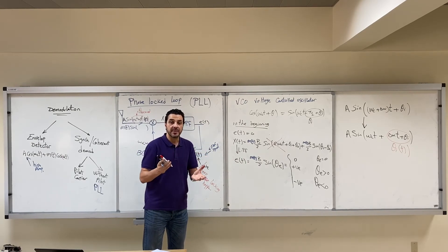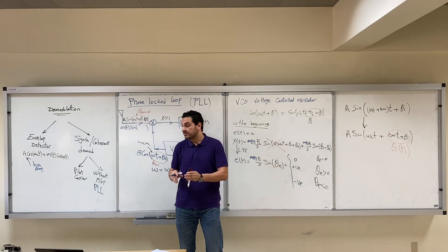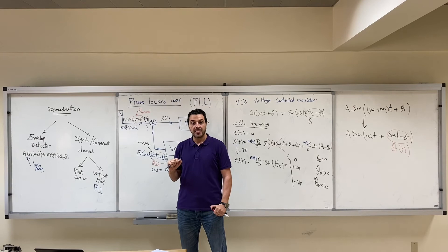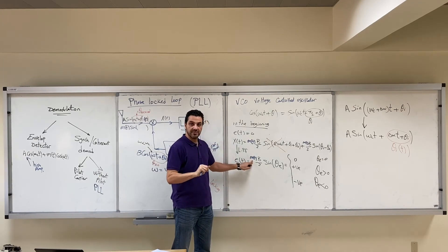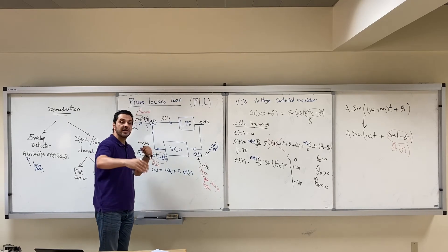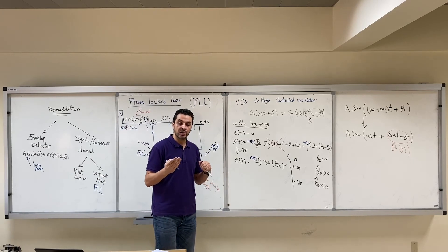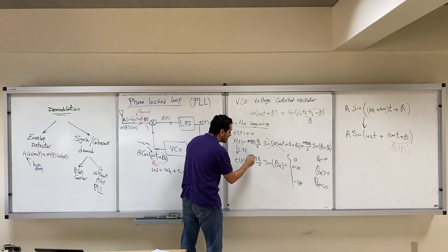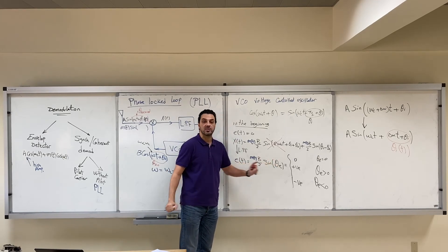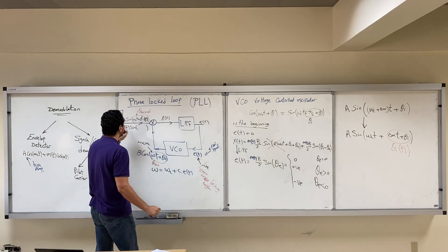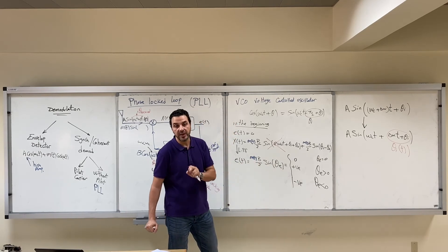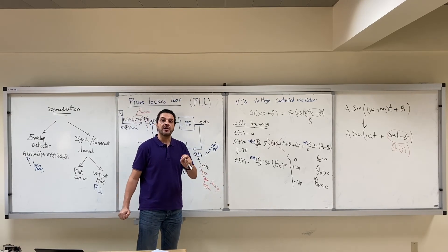Conversely, sometimes the error between theta_i and theta_naught is small, which should give a small error signal. But if M(t) is large at that instant, it will produce a large error signal, causing the VCO to change its frequency by a large amount and disturbing the operation of the PLL. When A was constant, the error depended only on the phase difference, but with M(t)·sin, the error also depends on M(t), causing improper operation.